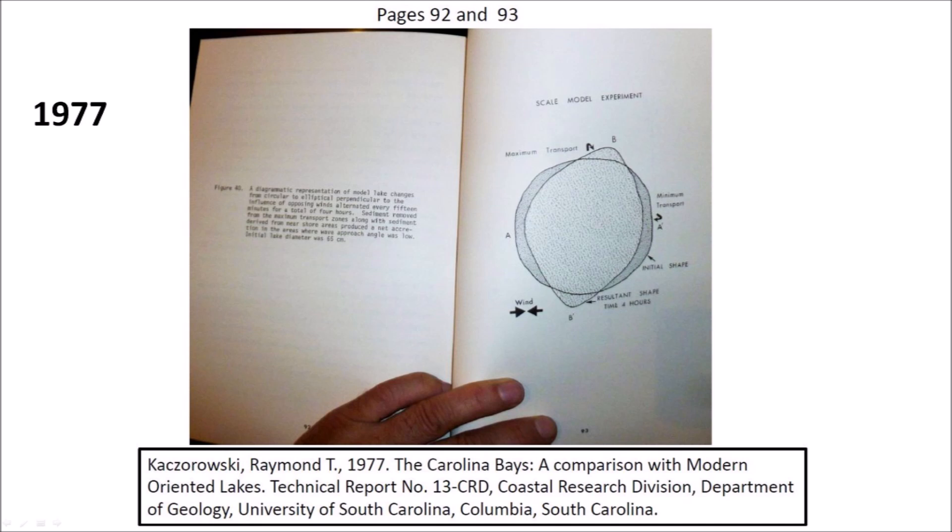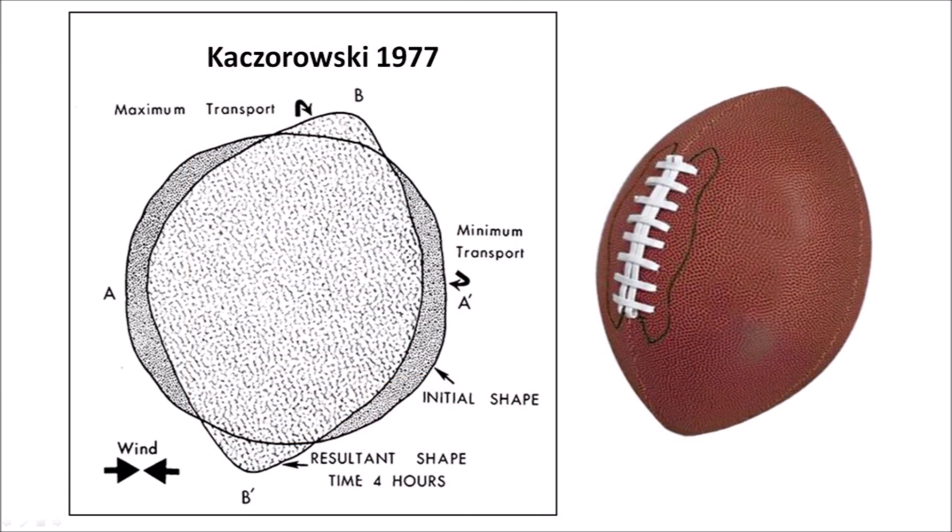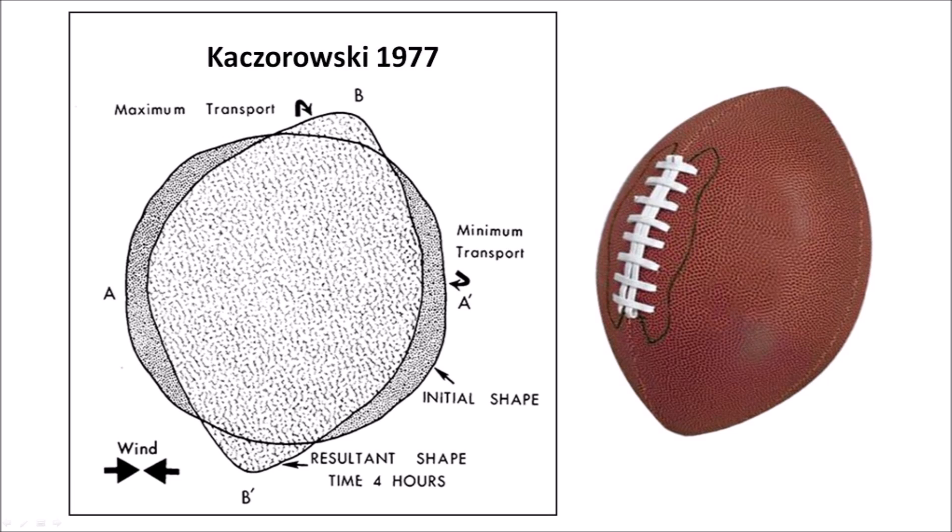In 1977, Raymond Kaczorowski wrote a thesis comparing the Carolina Bays to oriented lakes such as those found in Alaska. He conducted a sand table experiment where he carved a circular pool and set a fan to blow over the water. His thesis describes the experiment as changing Muddle Lake from circular to elliptical, but the experiment only produced a structure like a bloated American football with pointy ends, which did not have the smooth geometrical characteristics of an ellipse. By alternating the direction of the wind by 180 degrees every 15 minutes, Kaczorowski created conditions not found in nature and invalidated his argument about prevailing winds.